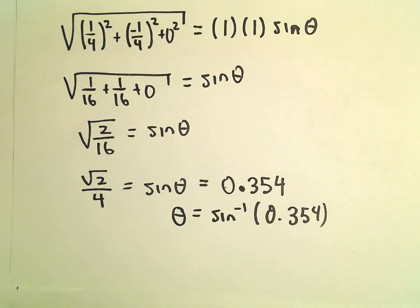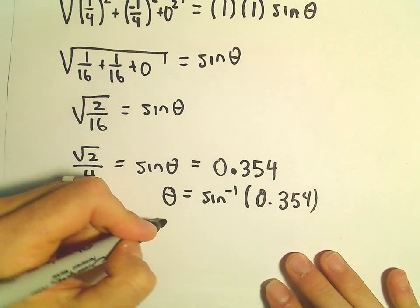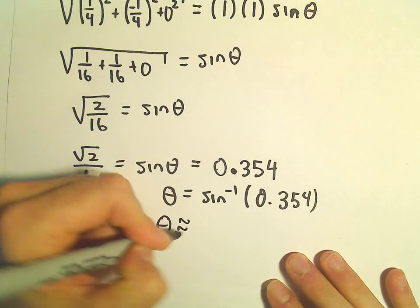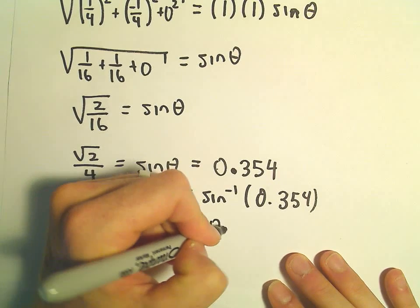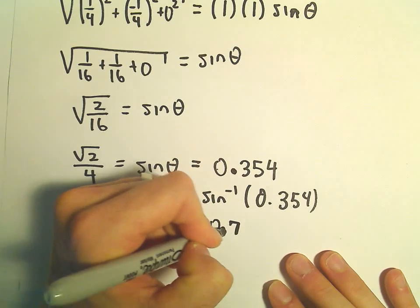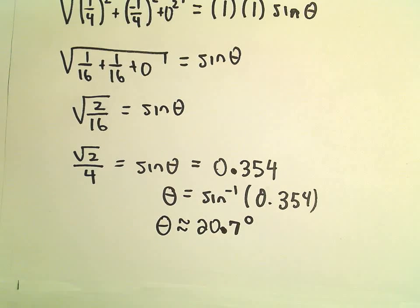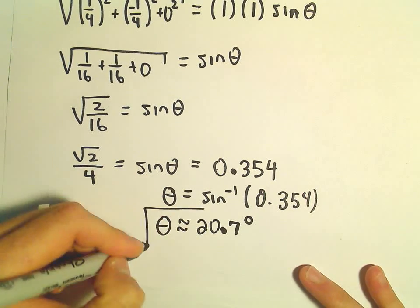Let me plug this into a calculator real quick. Arcsine of zero point three five four. Make sure everything is in degrees. I'm getting theta to be roughly equal to twenty point seven degrees. So that's one of our possible solutions.